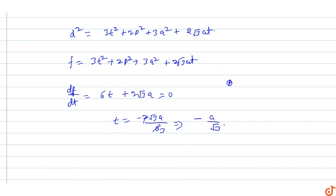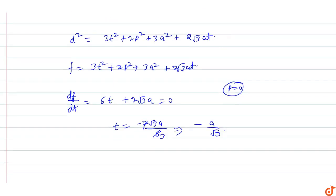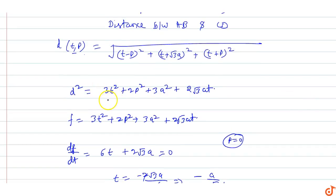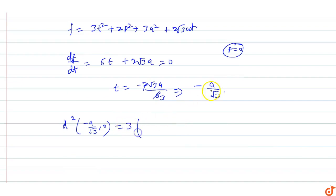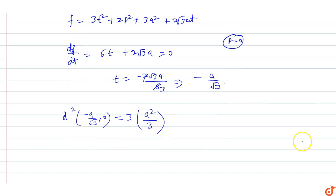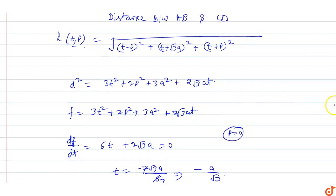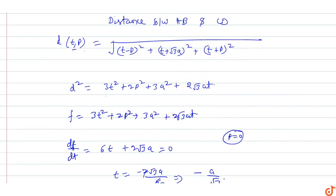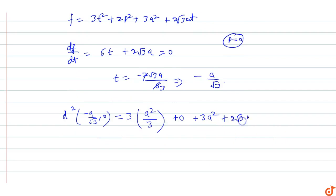Substituting t = -a/√3 and p = 0 into d²: d² = 3t² + 2p² + 2√3a·t + 3a² = 3·(a²/3) + 0 + 2√3a·(-a/√3) + 3a² = a² - 2a² + 3a².